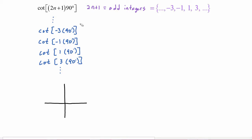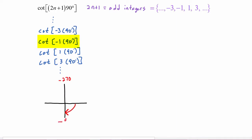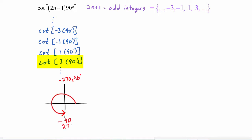Negative 3 times 90 is negative 270, which lands up here on the positive y-axis. Negative 1 times 90 lands down here on the negative y-axis. Positive 1 times 90 lands up here on the positive y-axis. And 3 times 90 is 270, which lives down here on the negative y-axis. So all our angles are falling either on the positive y-axis or the negative y-axis.